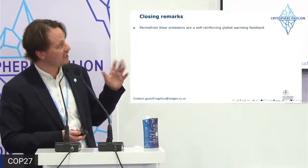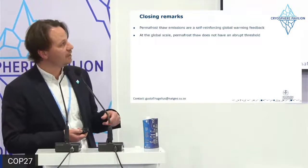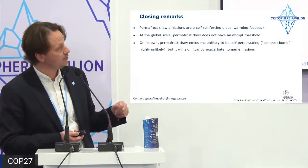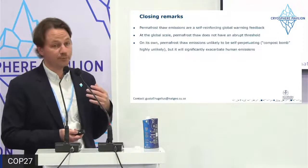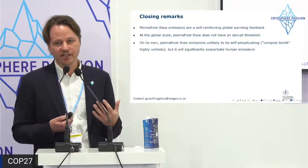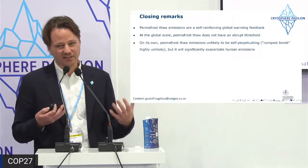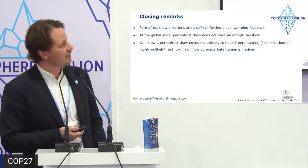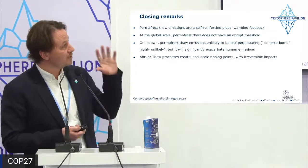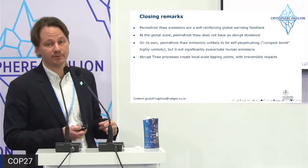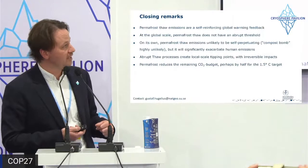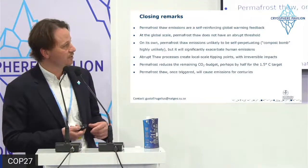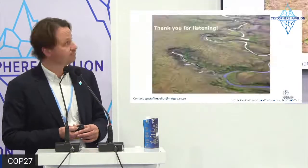Closing remarks: permafrost thaw emissions are a self-reinforcing global warming feedback. At the global scale, we don't see evidence of abrupt thresholds — every tenth of a degree matters but there's no clear abrupt threshold. On its own, permafrost thaw emissions are unlikely to be self-perpetuating in a 'compost bomb' scenario. However, they do significantly exacerbate human emissions, we see local-scale tipping points with irreversible impacts for centuries, and permafrost reduces the remaining CO2 budget — perhaps by half for the 1.5°C target. Once triggered, permafrost will cause emissions for centuries.